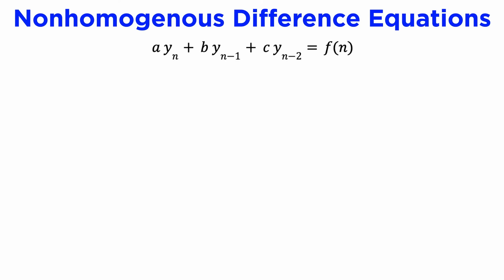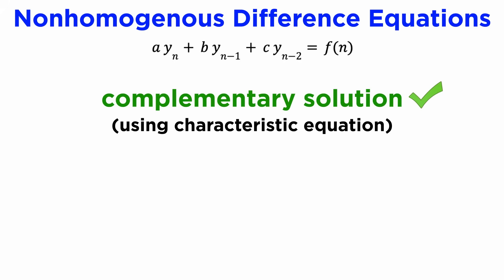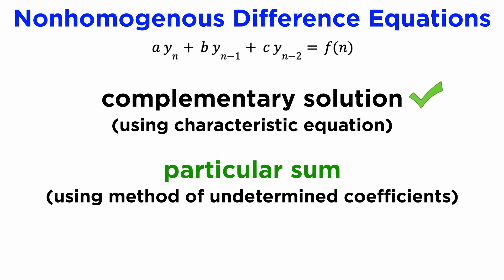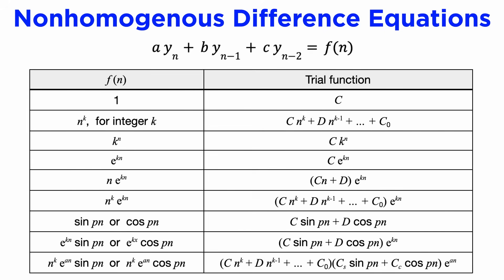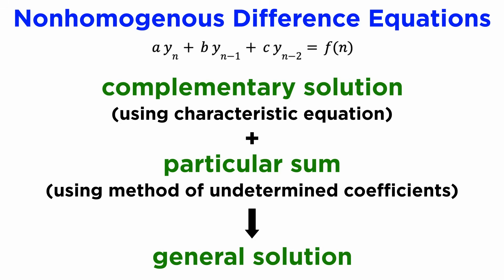We can also solve non-homogeneous difference equations in a similar way. Once we've found the complementary solution using the characteristic equation, we can use the method of undetermined coefficients. We write down a particular integral, which we could now call a particular sum, using the table shown. This table is completely identical to the one we saw for non-homogeneous differential equations, just with the independent variable x replaced with the index n. If the trial function is not linearly independent of the complementary solution, then we multiply the trial function by n. We then just add the two parts together to obtain our general solution.